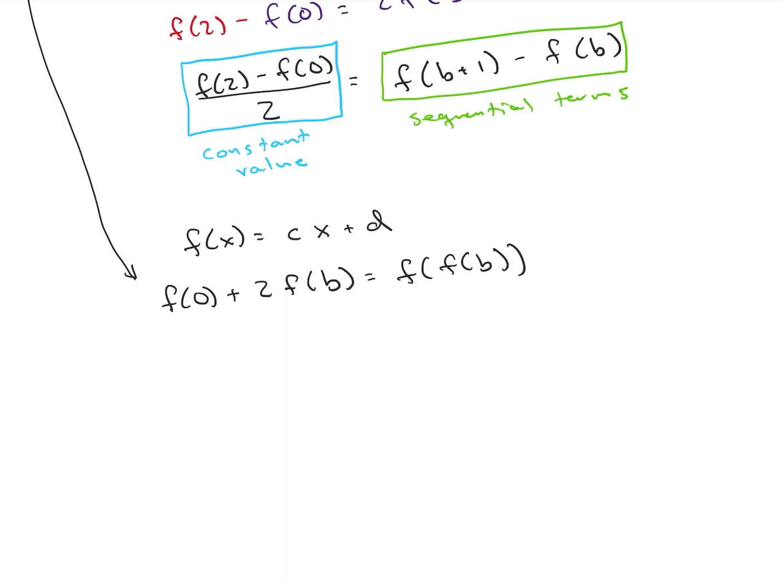So now let's plug in our equation here. We have cx plus d. So I'm going to have c times 0 plus d plus 2 times c times b plus d equals c times cb plus d plus d. Let's rearrange. This simplifies to 2cb plus 2d equals c squared b plus cd.